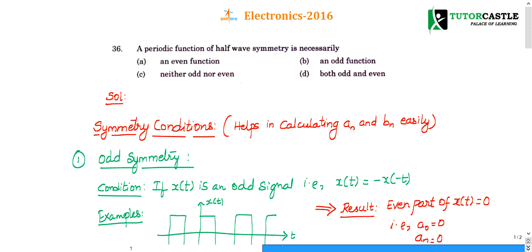Question number 36. A periodic function of half wave symmetry is necessarily: an even function, an odd function, neither odd nor even, or both odd and even.